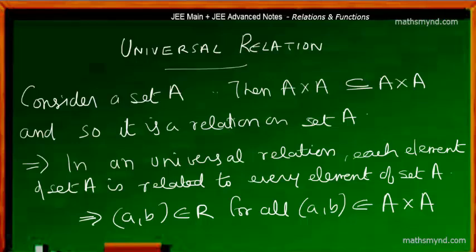This means that all possible ordered pairs, or all the elements, are forming ordered pairs. So the number of ordered pairs is naturally the maximum in the case of a universal relation for any given particular set.